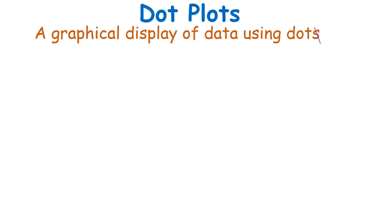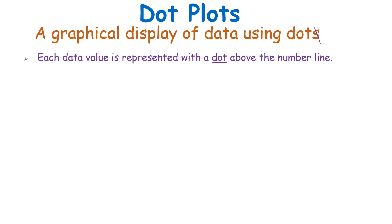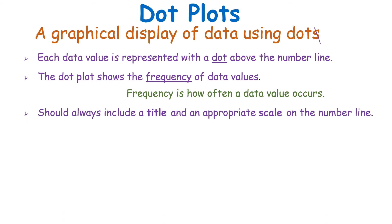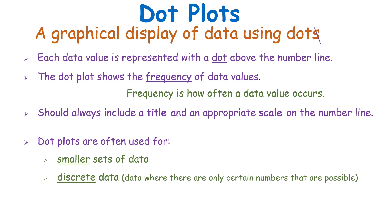The last type of graph is a dot plot — a graphical display using dots. Each data value is represented by a dot above the number line, showing the frequency of each value, meaning how often that data value occurs. Always include a title and an appropriate scale for your number line. Dot plots are often used for smaller sets of discrete data, where typically no decimals are involved.